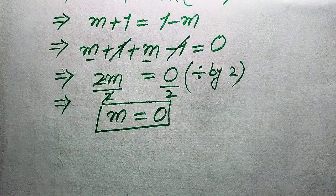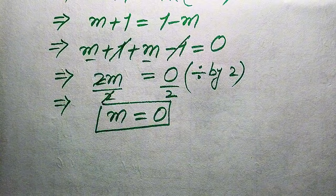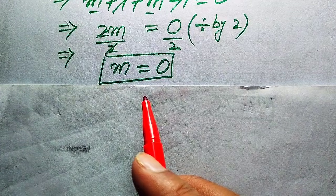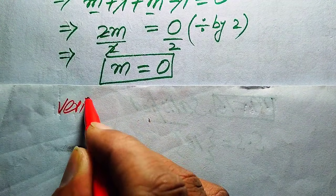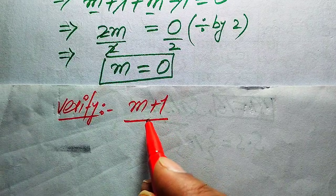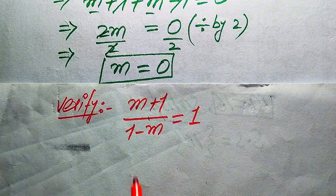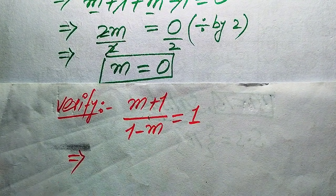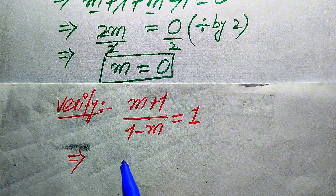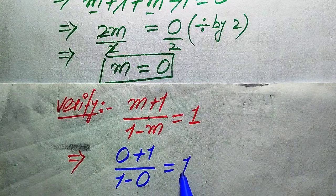This is the trivial solution of this problem — we get only one root of the given equation, which is m equals 0. In the next step we need to verify whether this value of m satisfies our given equation or is an extraneous root. We copy down the given equation: (m+1) divided by (1 minus m) equals 1, and substitute m equals 0 into the left-hand side.